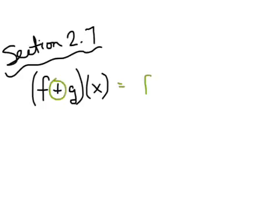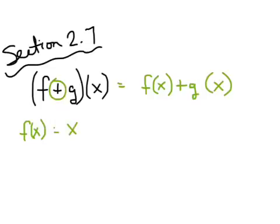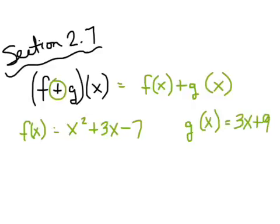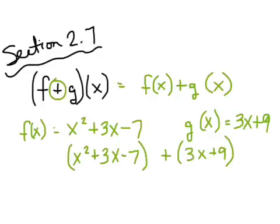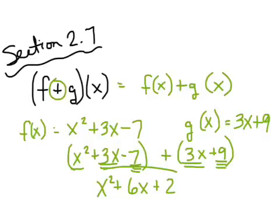That symbol right there means add. So we're going to add functions together. When you're looking at adding functions, all we're doing is adding like terms. If I give you a function like f(x) equals x squared plus 3x minus 7, and g(x) is 3x plus 9, all I'm going to do is combine like terms. So the first one is x squared plus 3x minus 7 plus 3x plus 9. Looking for combining like terms, there is no other squared term, so that's going to be all by itself. 3x plus 3x is 6x. Negative 7 plus 9 is 2. And I've got my answer.